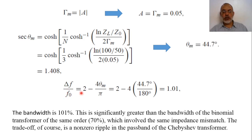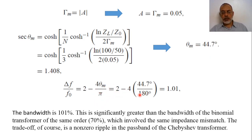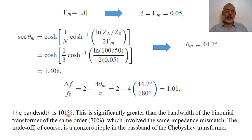The operating bandwidth ΔF/F_0 = 2 − (4θ_max/π), where θ_max is in radians. Since θ_max is given in degrees we convert accordingly. The operating bandwidth in this case is 1.01, or in other words 101 percent. So the bandwidth for this Chebyshev transformer is 101 percent.